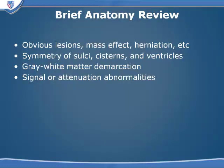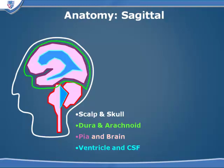Before we can talk about the localization of lesions, we have to have a brief review of the anatomy and it's also very good to have a logical approach in looking at the image and have a checklist. You look first for obvious lesions, mass effect, or herniation. Examine the symmetry of the sulci, the cisterns, and the ventricular system for signs of mass effect and herniation. Can you see the gray-white matter demarcation, which may be lost if the patient is having vasospasm or an ischemic event? And then we can look for signal or attenuation abnormalities.